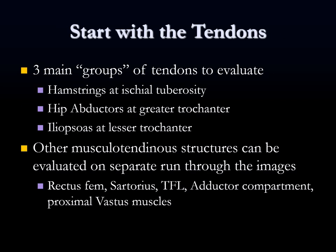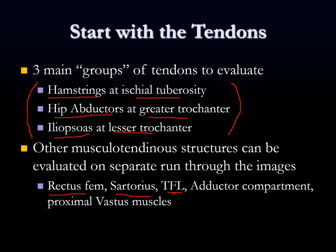The three main tendon groups to evaluate are: hamstrings at the ischial tuberosity, hip abductors (gluteus medius and minimus) at the greater trochanter, and iliopsoas at the lesser trochanter. Other musculotendinous structures can be reviewed as needed. Remember pediatric avulsion fracture attachment sites - rectus femoris, sartorius from the iliac spines, tensor fasciae latae, and the adductor compartment in the upper thigh.